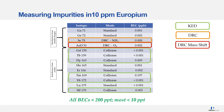Measuring impurities in 10 ppm europium, looking at interferences from double charges, gallium and germanium can be measured in standard mode whereas selenium is now in a DRC ammonia mode and arsenic is again in a mass shift DRC oxygen mode. Interferences from the oxides will mainly be a mixture of collision and standard mode depending on which element.